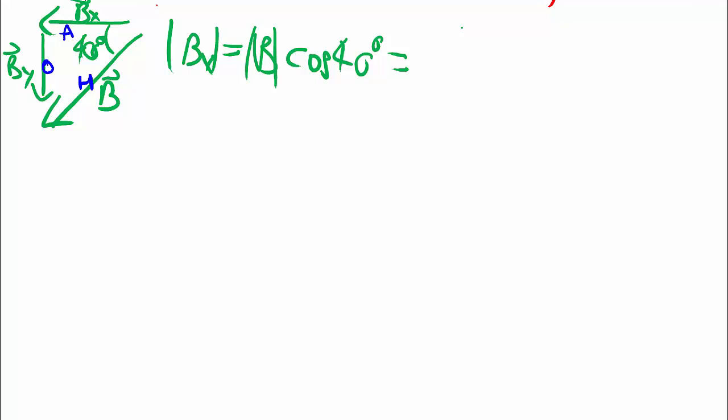Again, using the degree mode in your calculator, B we're told is 20 meters, we will get 15.3209 meters. So then Bx as a vector going to the left is negative 15.3209.